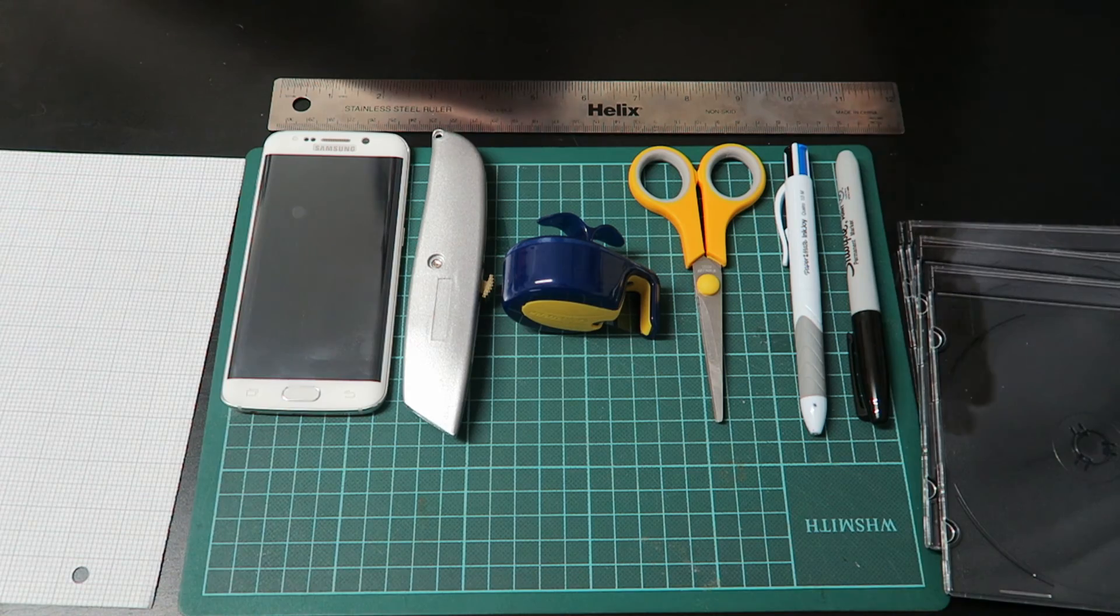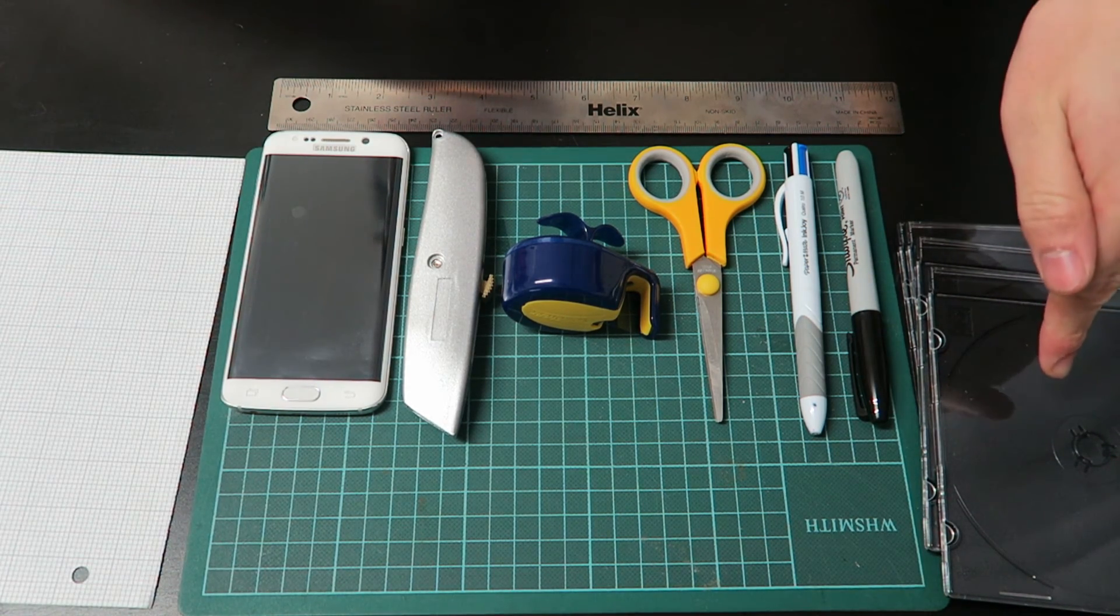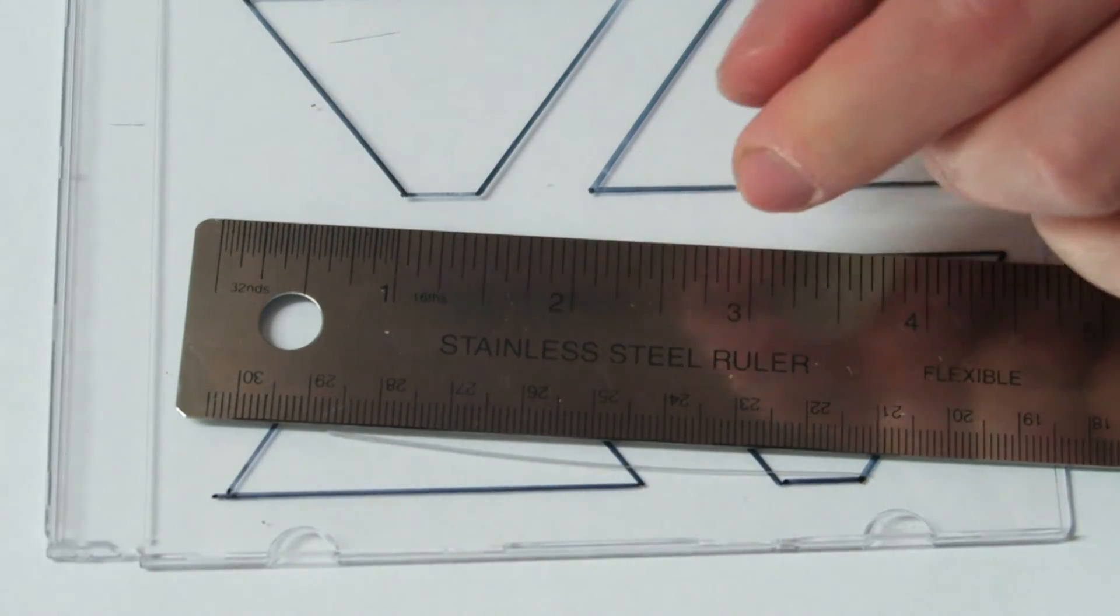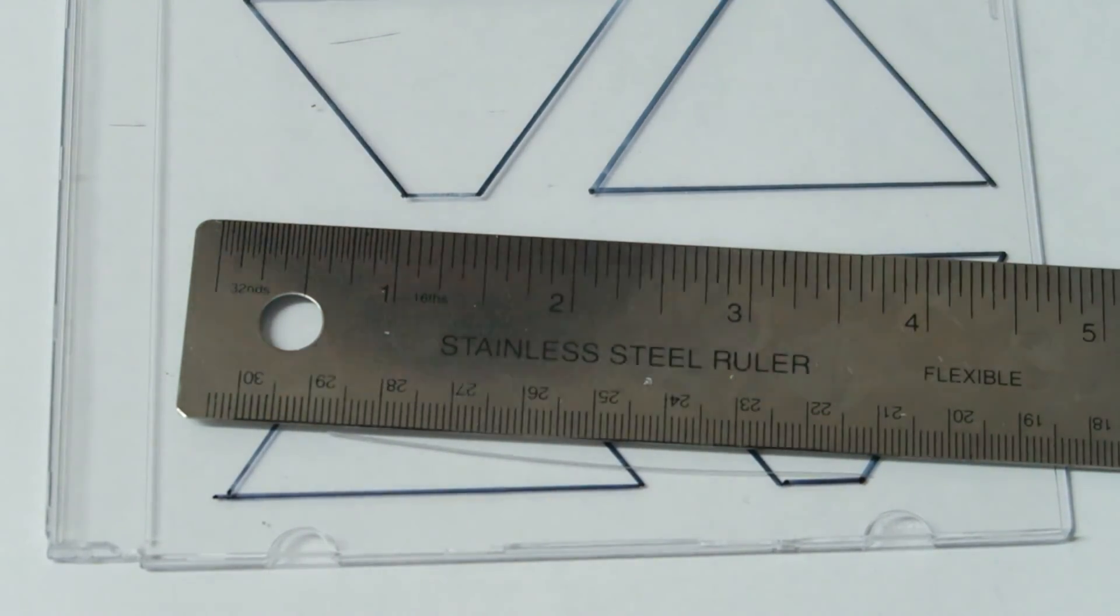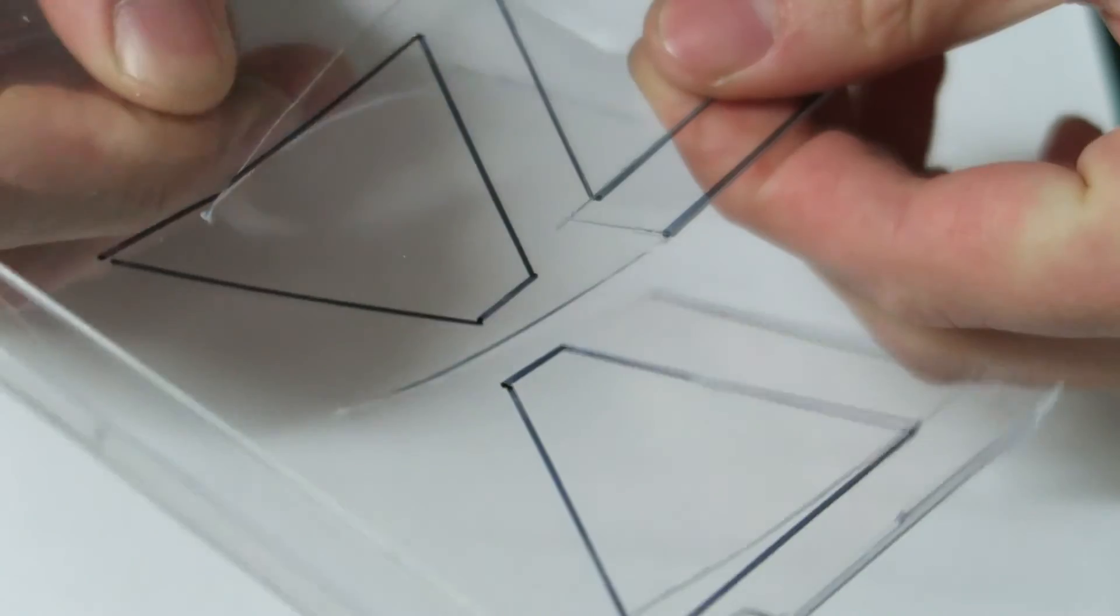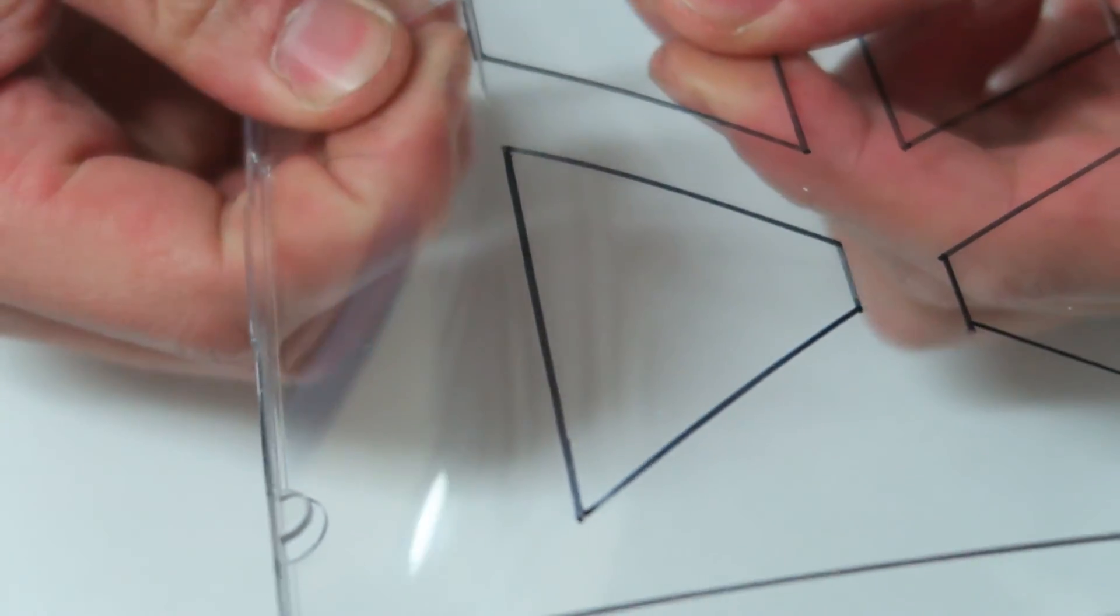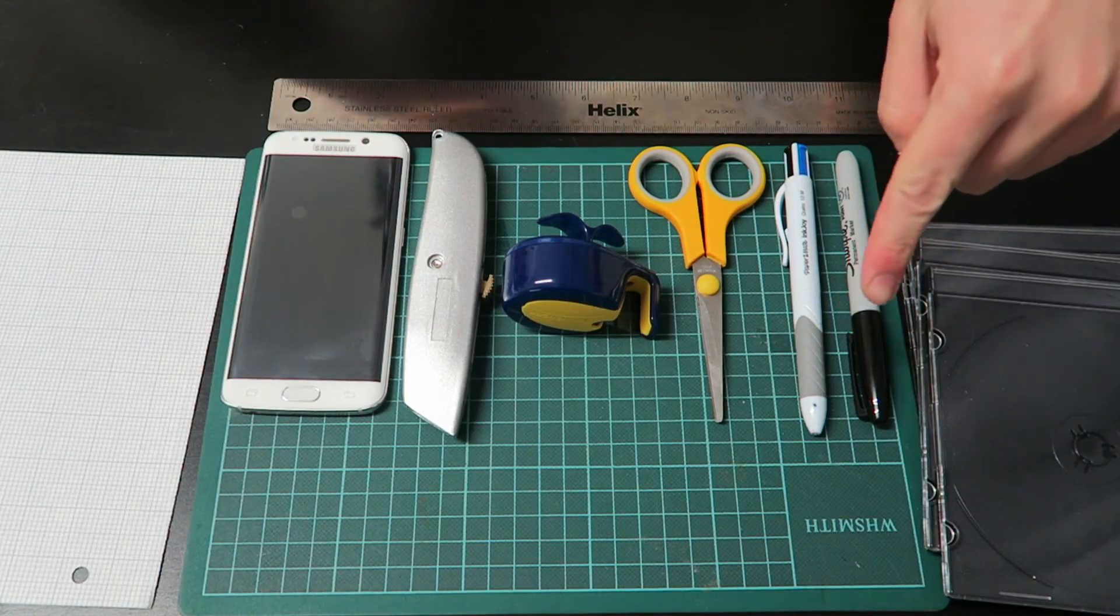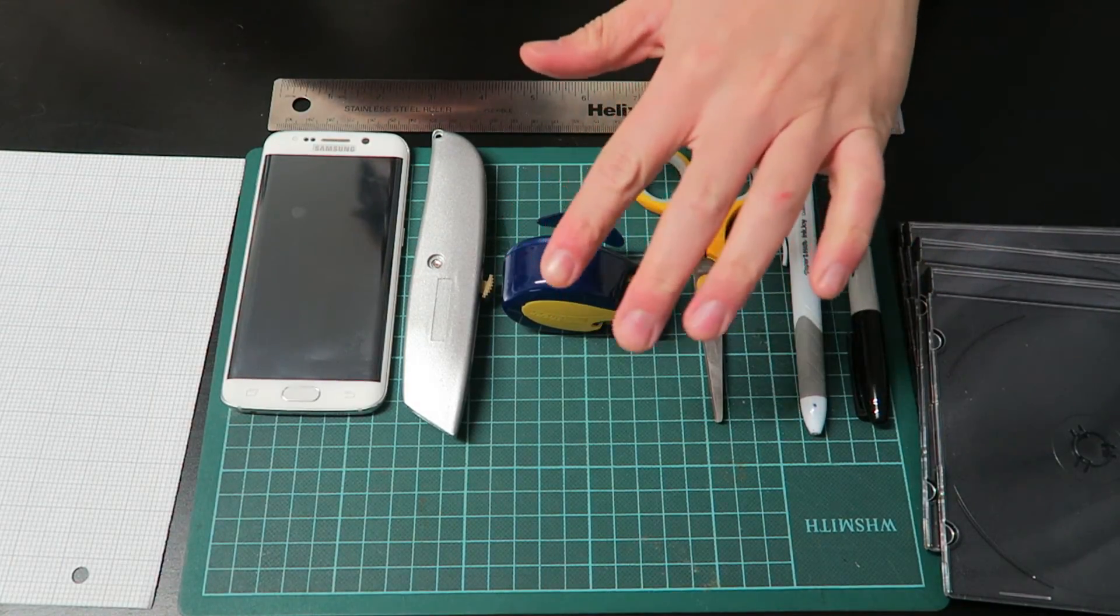Right, so what you're going to need are some CD cases—I say cases because you might need more than one. Marker pen, a pen, some scissors, and tape.